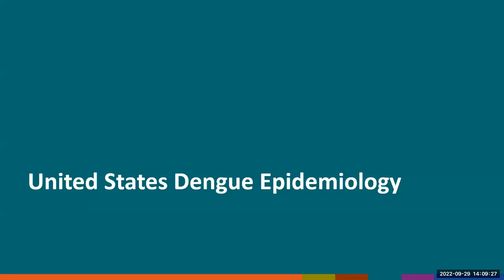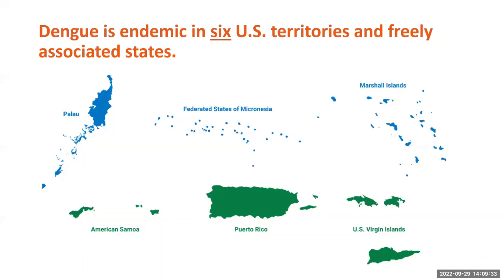Let's take a look at dengue epidemiology in the United States. Dengue is endemic in six U.S. territories and freely associated states: Palau, the Federated States of Micronesia, the Marshall Islands, and American Samoa in the Pacific, and Puerto Rico and the U.S. Virgin Islands in the Caribbean.